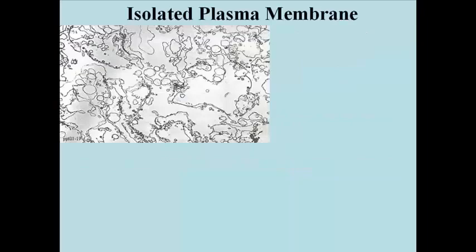The plasma membrane can be fractionated as a relatively high speed supernatant in a cell fractionation. The TEM here shows such an isolate.